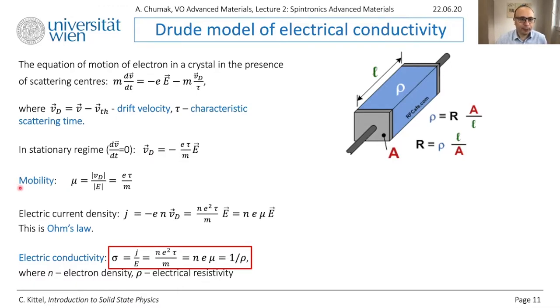Then we introduce this very important parameter. If you take drift velocity and normalize it with applied electric field, you get rid of the external force. This is more characteristic of the system itself, of your conductor. This characteristic is named mobility, and it can be found as e tau over m.